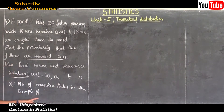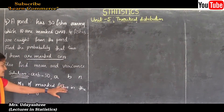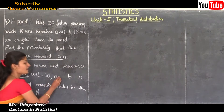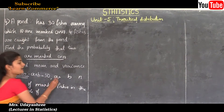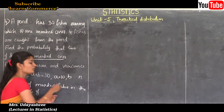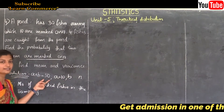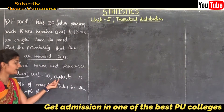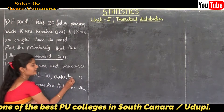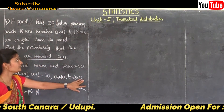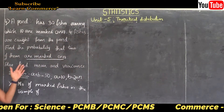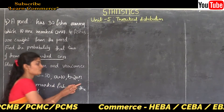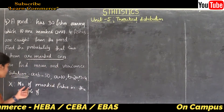Here x represents marked fishes, so a is the number of marked fishes. Marked fishes are 10, so a equals 10. Since a plus b equals 30 and a equals 10, b equals 20. Now n is 4, because 4 fishes are caught from the pond — the sample size is 4. So n equals 4.